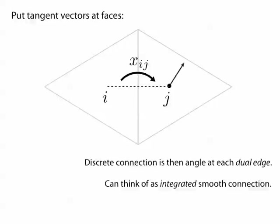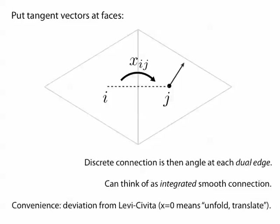Just like in the smooth case, every discrete surface comes with a canonical connection, the discrete Levi-Civita connection, which we can think of in the following way.